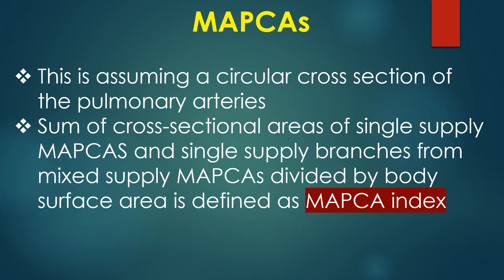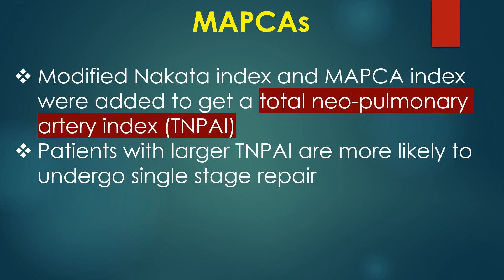This is assuming a circular cross-section of the pulmonary arteries. The sum of cross-sectional areas of single supply MAPCAS and single supply branches from mixed supply MAPCAS divided by body surface area is defined as the MAPCA index. The modified Nakata index and MAPCA index are added together to get a total neopulmonary artery index, or TNPAI. Patients with a larger TNPAI are more likely to undergo single stage repair.